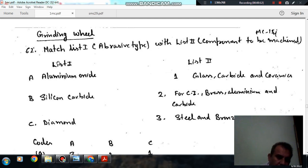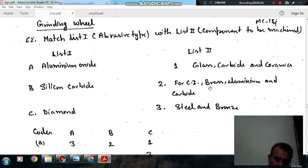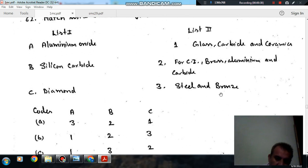Question number 52 is match list 1 abrasive type with list 2 components to be machined. List 1: A aluminum oxide, B silicon carbide, C diamond. List 2: glass carbide ceramics, cast iron brass aluminum and carbide, steel and bronze.